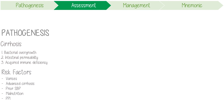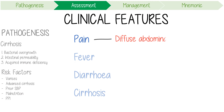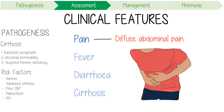The main clinical features of spontaneous bacterial peritonitis include abdominal pain, fever, diarrhea, and features of decompensated cirrhosis. Diffuse abdominal pain is the hallmark of SBP. Unlike the classic presentation of secondary peritonitis from something like a perforation, which results in a rigid abdomen, the pain in SBP is more diffuse and subtle.